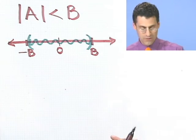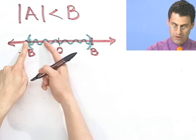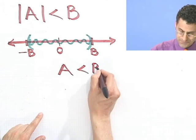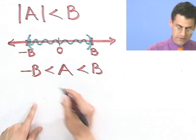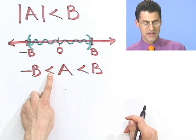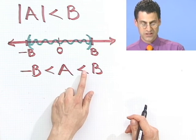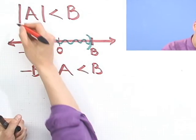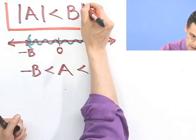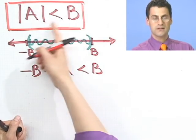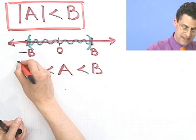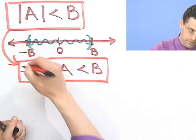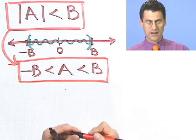It would just be all the points that are in here. So A would be between B and minus B — specifically, minus B less than A, which in turn is less than B. The cool thing is that this kind of statement, an inequality with absolute value, is identical to this compound inequality. You just make a conversion, and this is something we know how to solve.